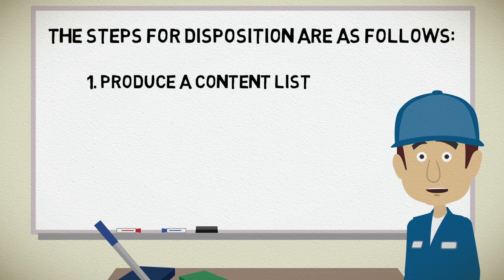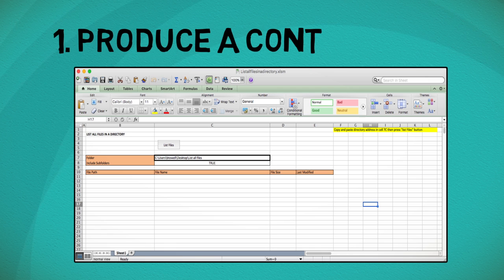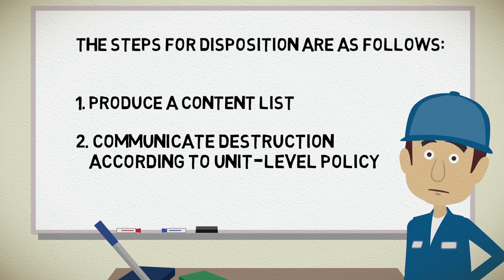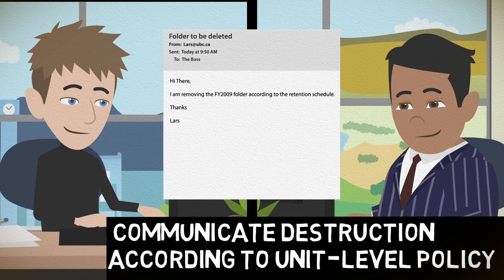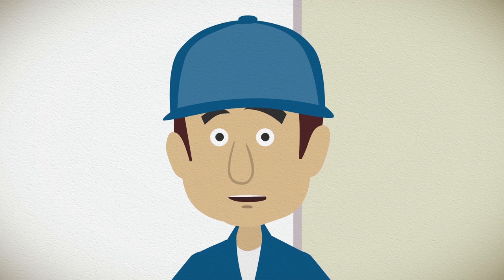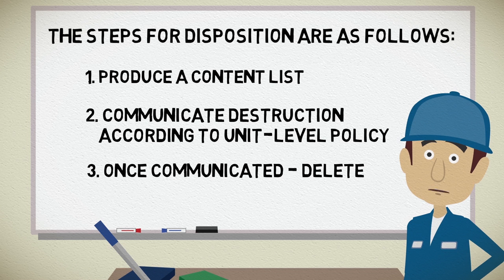The steps for disposition are as follows. First, we produce a content list — an Excel spreadsheet with a macro that captures content, available from UBC's records management office. Second, Lars communicates destruction according to unit-level policy. Remember, both paper and electronic records should be destroyed at the same time. Finally, we store the content list in the appropriate folder on the shared drive.